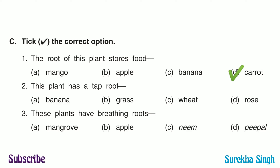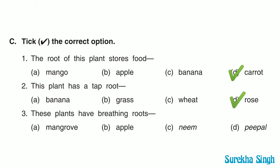2. This plant has a tap root. Option A: Banana. Option B: Grass. Option C: Wheat. Option D: Rose. Here option D is correct. A rose plant has a tap root. Banana, grass and wheat have fibrous roots.